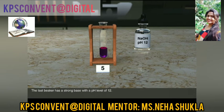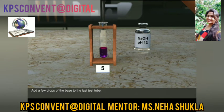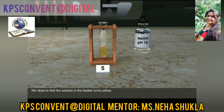The last beaker has a strong base with a pH level of 12. Add a few drops of the base to the last test tube. We observe that the solution turns yellow.